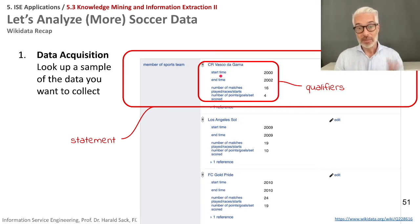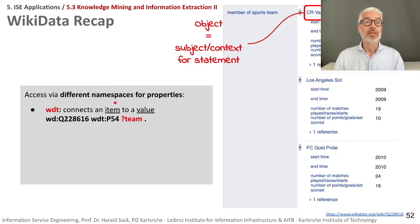We need different namespaces for that and I will tell you how this works. So we access the data via different namespaces that exist for our properties. The property we are looking here first is here members of sports team. This is P54 and if we use the standard namespace WDT, you have heard and seen this already in Wikidata.